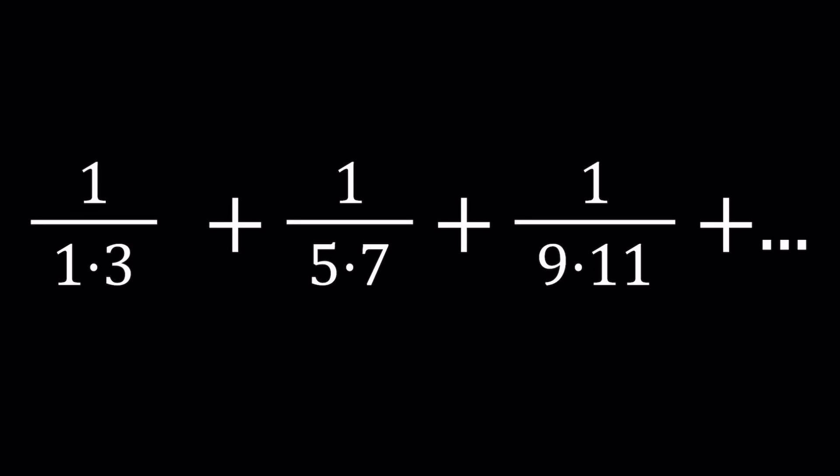Hello everyone, in this video we're going to be evaluating an infinite sum. We have 1 over 1 times 3, plus 1 over 5 times 7, plus 1 over 9 times 11, and so on, where we have the reciprocals of the products of consecutive odd numbers like 1, 3, 5, 7, 9, 11.